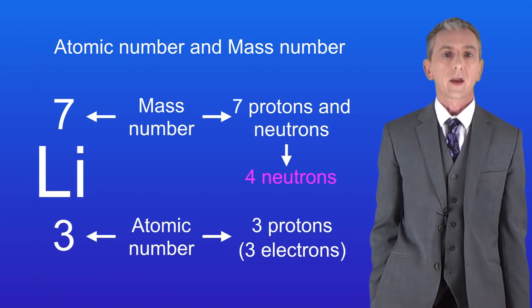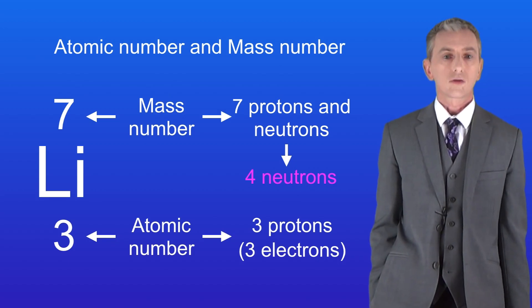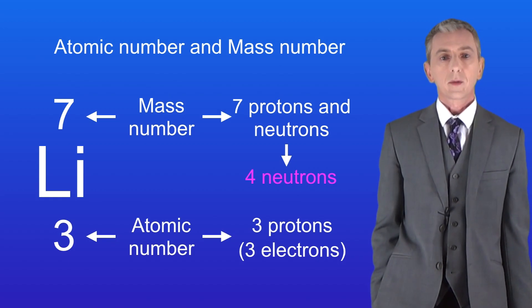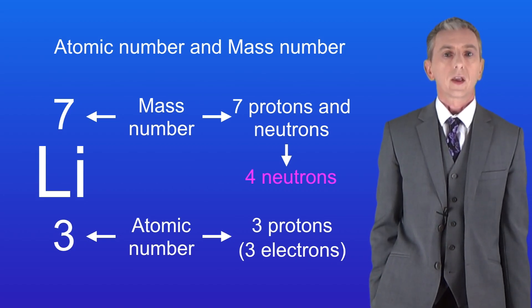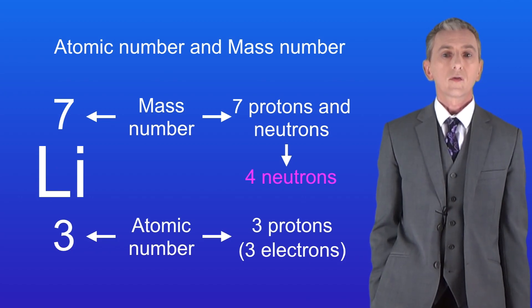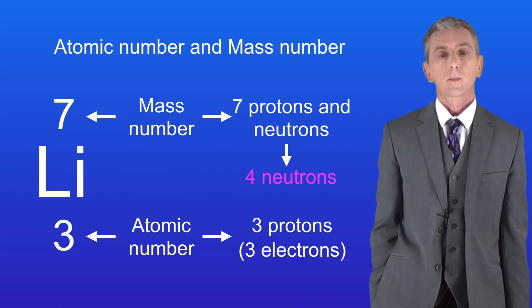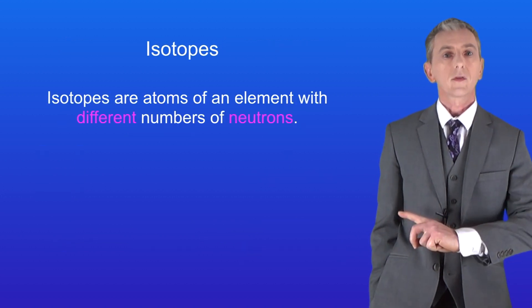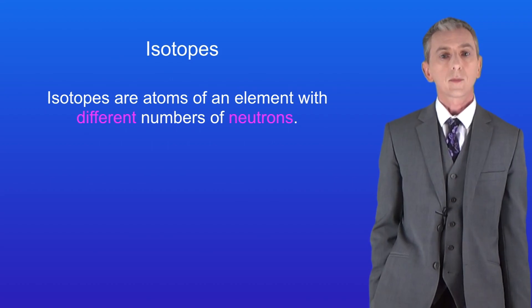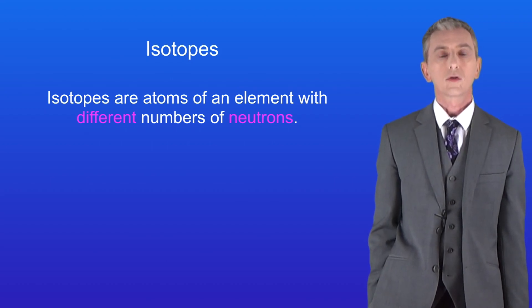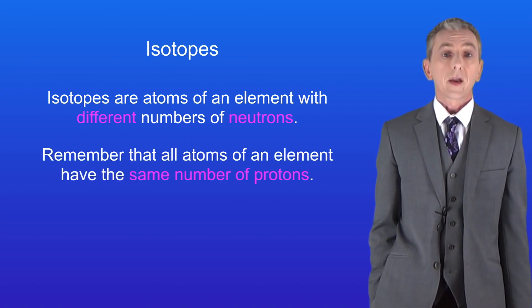Now I said before that atoms of lithium contain four neutrons but this is not strictly true. Most atoms of lithium do contain four neutrons but some atoms of lithium contain a different number of neutrons. We call all of these versions of lithium isotopes. So here's the definition of isotopes and you do need to learn this: isotopes are atoms of an element with different numbers of neutrons. Remember that all atoms of an element have the same number of protons.